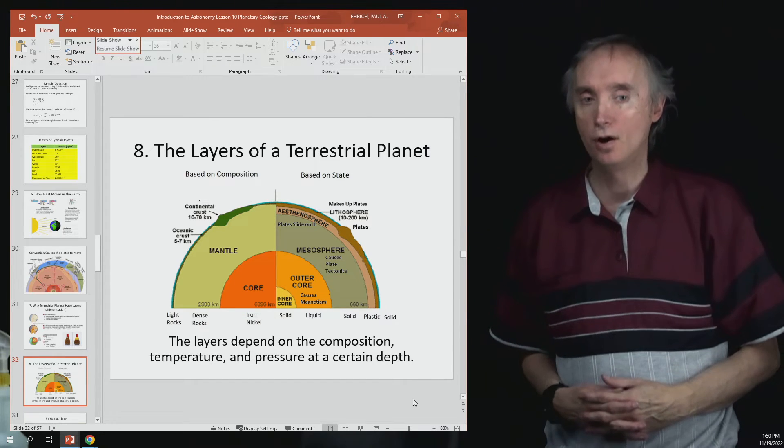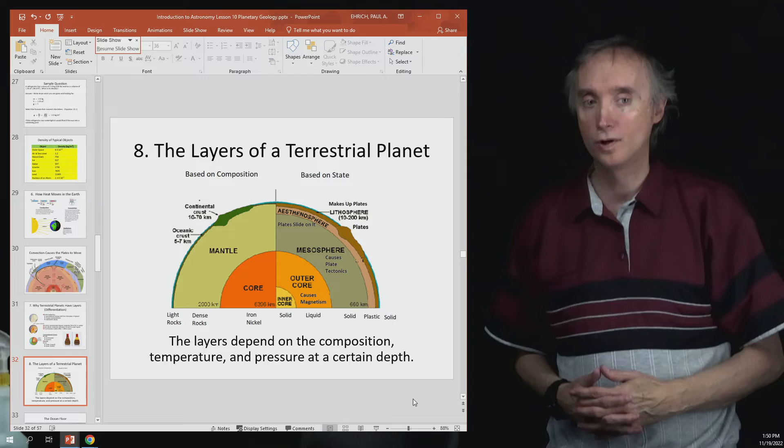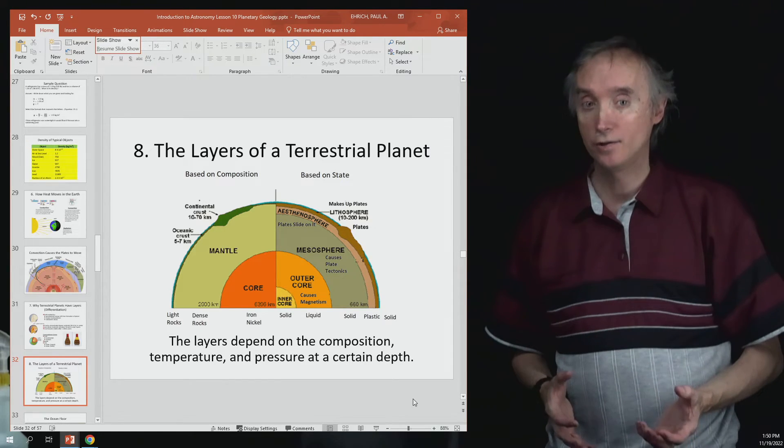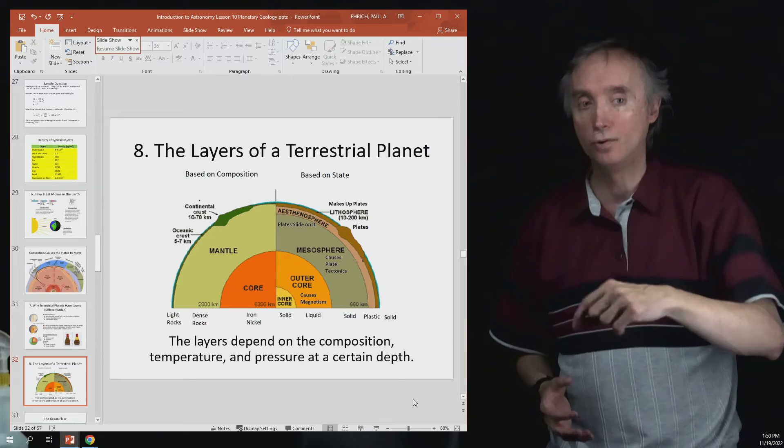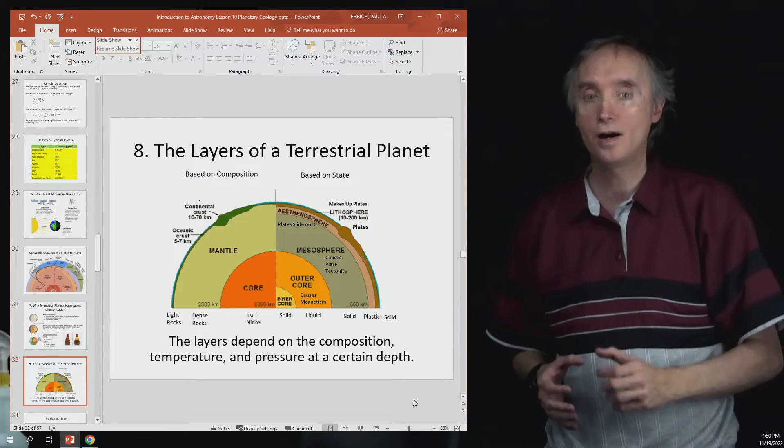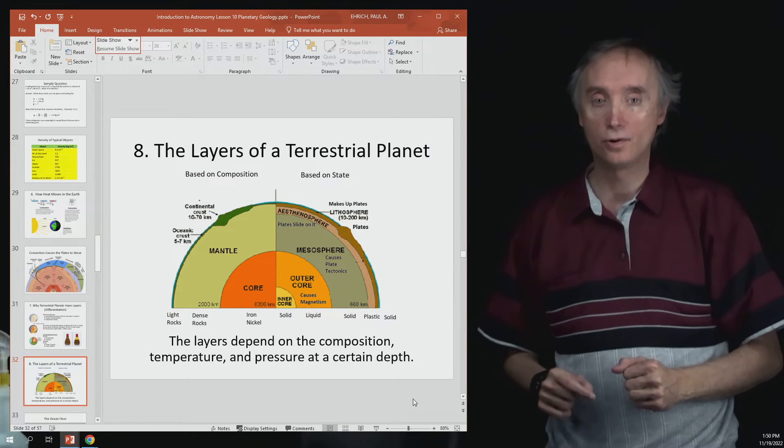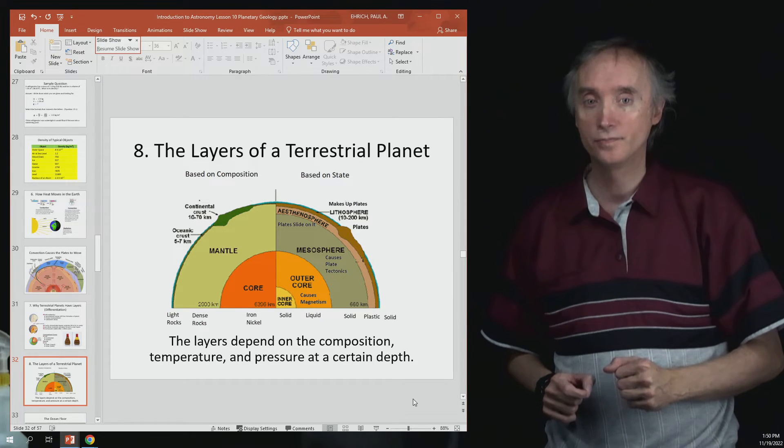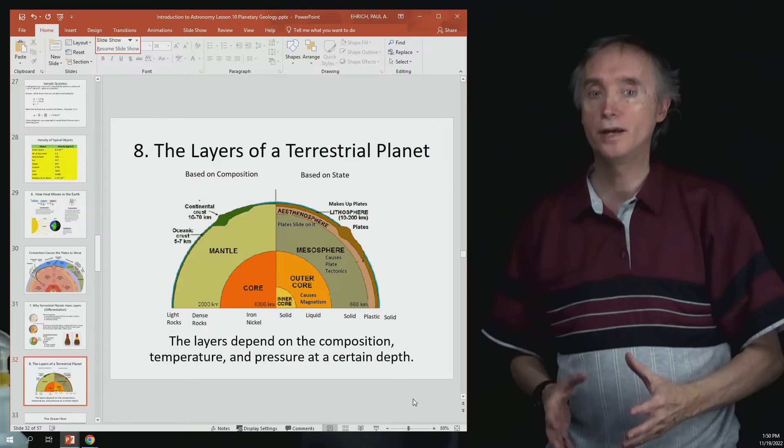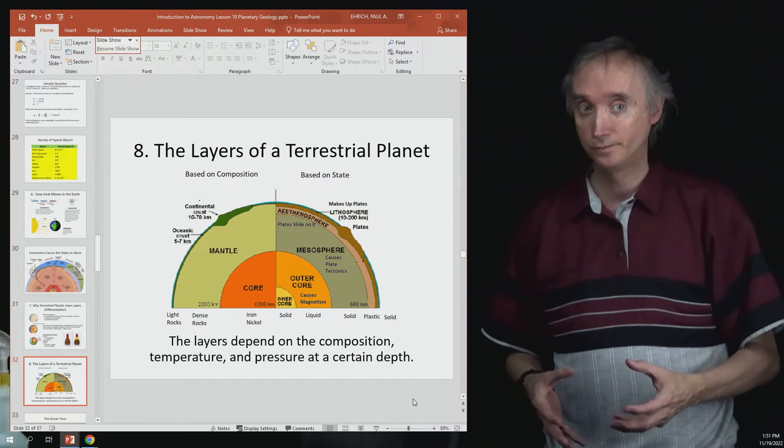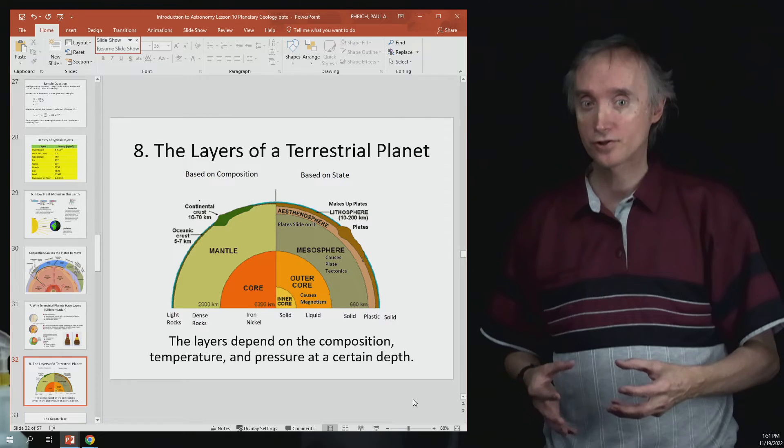Because you know that when you heat something up what does it turn into? It turns into a liquid and we know that the deeper you go inside the Earth the hotter it gets. So why is it that the inner core is a solid? Temperature wants to make it a liquid. So is there something that could be stronger than the effects of temperature? Yes. What do you think it is? Pressure.